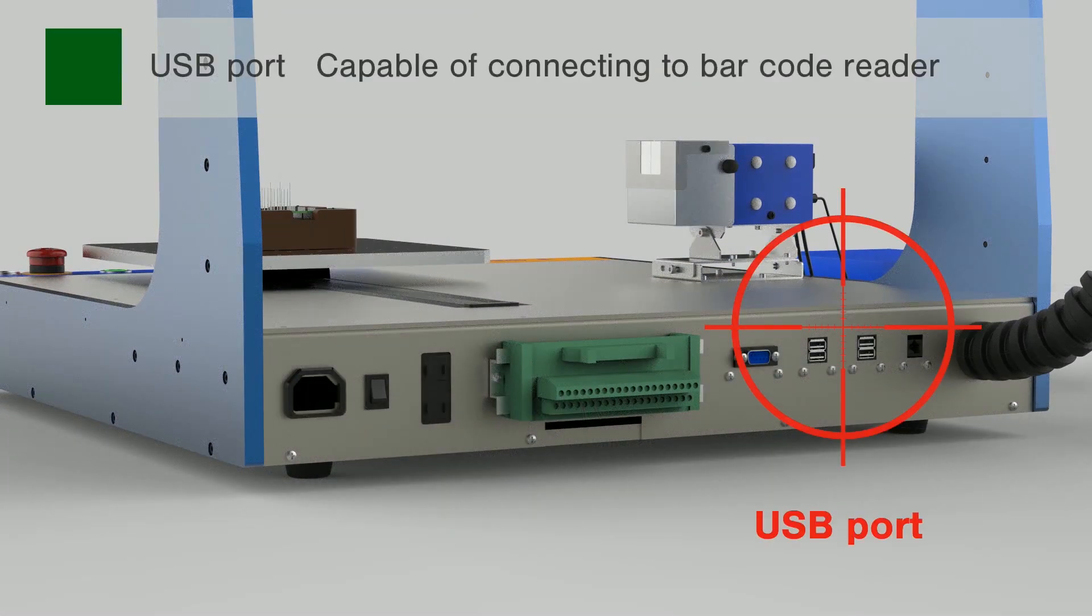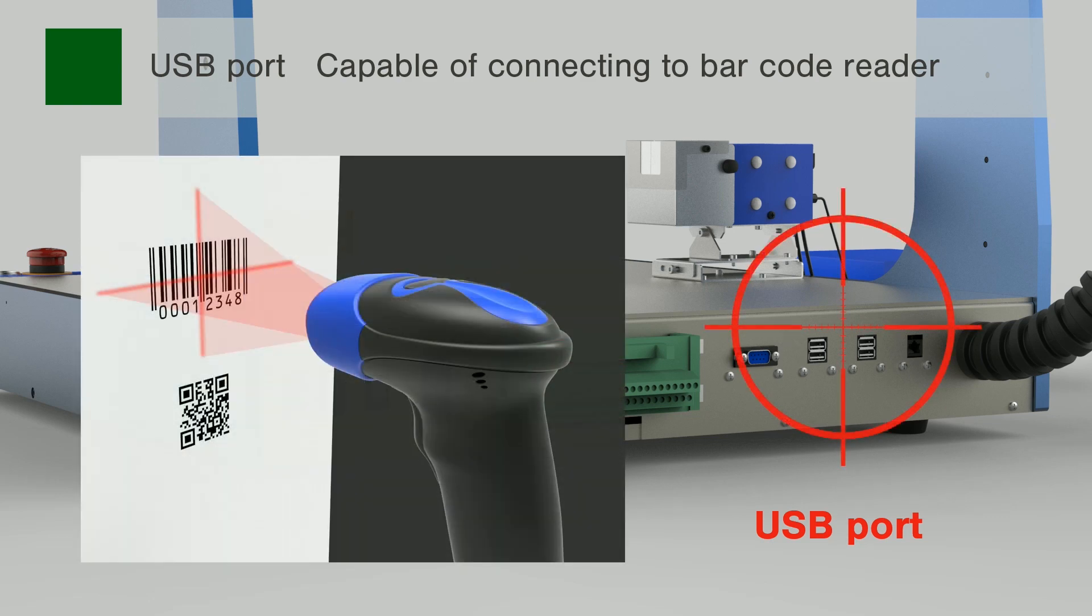The USB board is prepared at the back of robot to connect a USB barcode reader in order to read barcodes printed on substrates and work procedures to automatically call corresponding programs. This feature prevents human error, such as misreading a program.